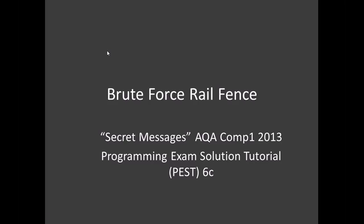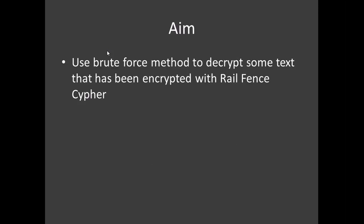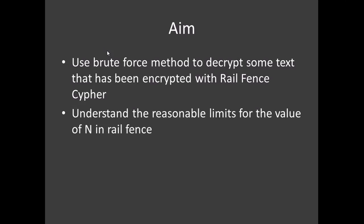Welcome to another AQA Comp 1 2013 Programming Exam Solution Tutorial. We are going to look at another brute force, and this time we are going to brute force the rail fence. Basically, I am hoping we will show how we can decrypt some text where we don't have a key — we have no idea what the key is, but we can still decrypt it just by trying every key. There are some limits to this for the rail fence, rather than the Caesar cipher.